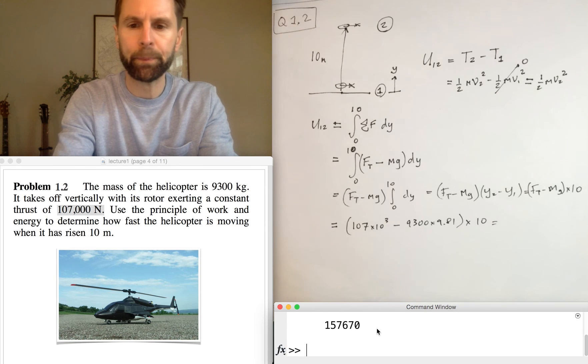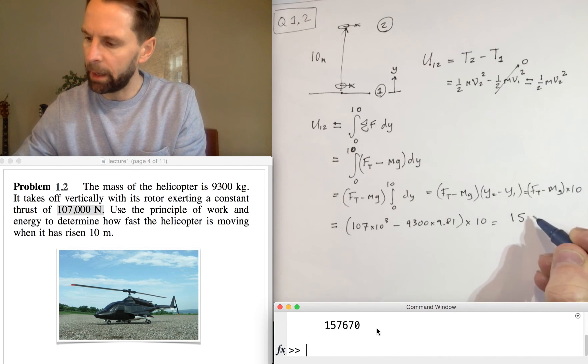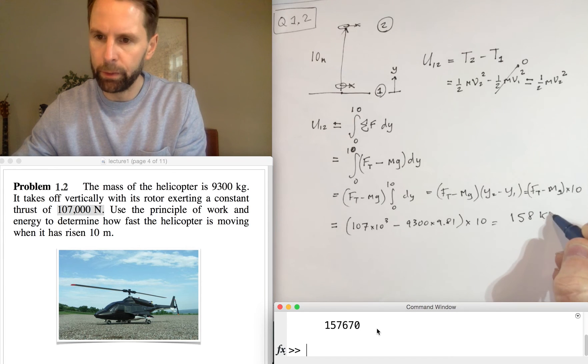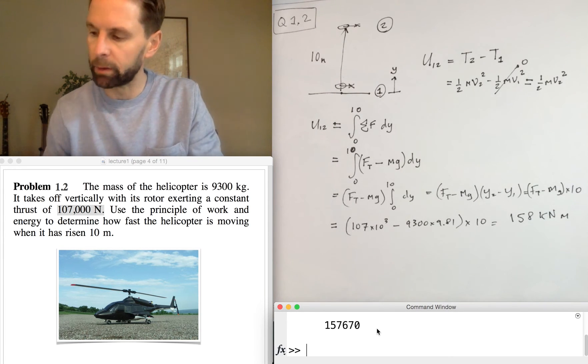And that will equal, let me just do some sums here, so 107 times 10^3 minus 9300 times 9.81 times 10 gives us that, which is 158 kilonewton meters. Those are the units of work done, or joules.